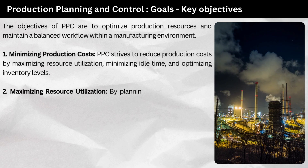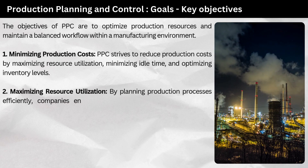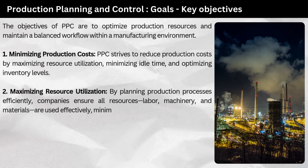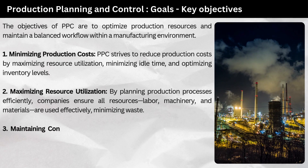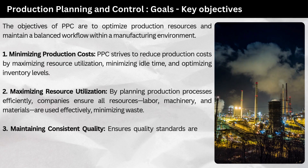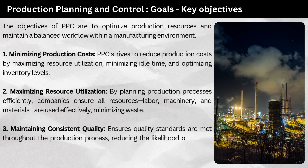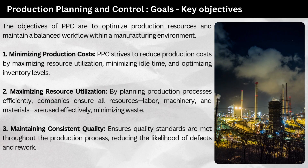Maximizing resource utilization: by planning production processes efficiently, companies ensure all resources — labor, machinery, and materials — are used effectively, minimizing waste. Maintaining consistent quality: this ensures quality standards are met throughout the production process, reducing the likelihood of defects and rework.